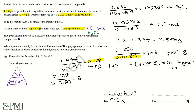Now we work out the formula of D and E. D is the complex ion formed when A dissolves in water. This is chromium with six water ligands, [Cr(H₂O)₆]³⁺, with a 3+ charge because we've lost the three chlorines. E is a grey-green precipitate formed when D reacts with sodium hydroxide, giving chromium hydroxide, Cr(OH)₃.